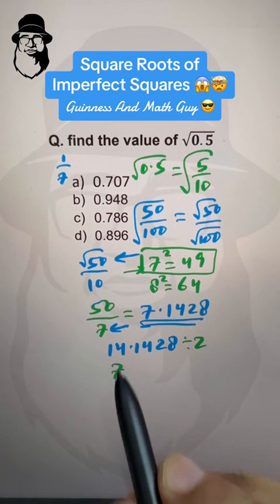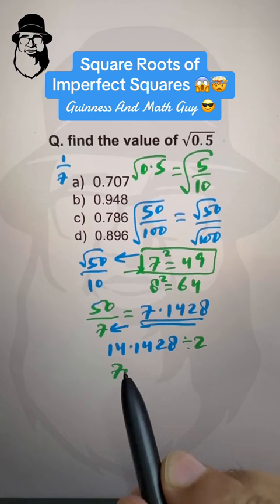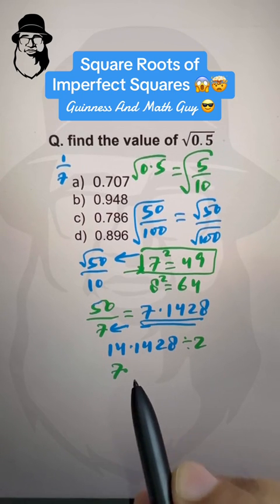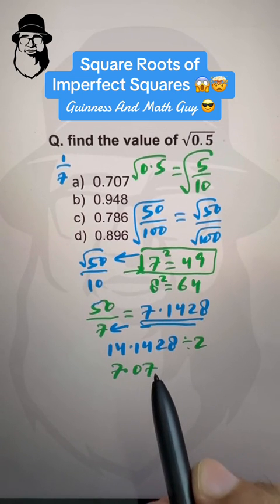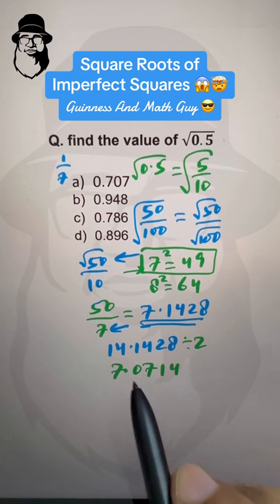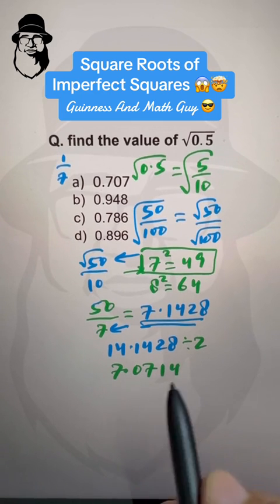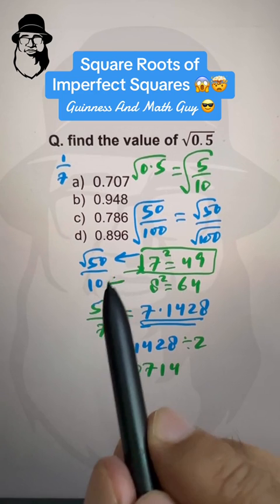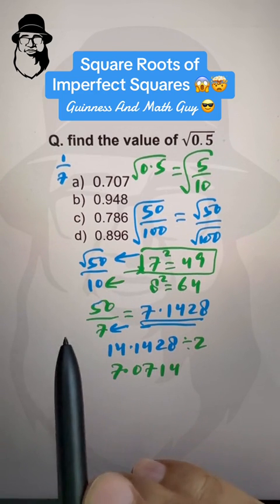divided by 2, 2 times 7 is 14, point, we'll take 1 digit at a time, 2 times 0 is 0, 2 times 7 is 14, and 2 times 1, 2 times 4. And, this is our final answer,